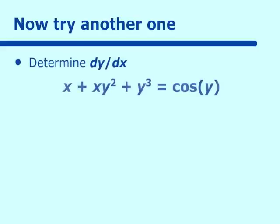Let's go on with another example: determine dy/dx of x plus x times y squared plus y cubed equals cosine y. We cannot solve for y in this — the derivative of x is no problem, but when we come to the x times y squared term, we see that we have to use the product rule.